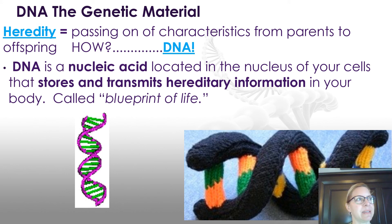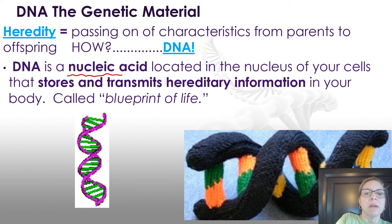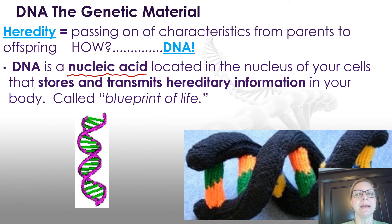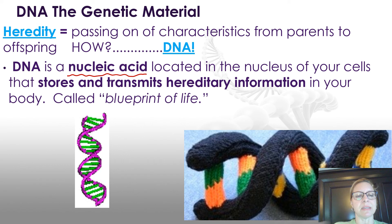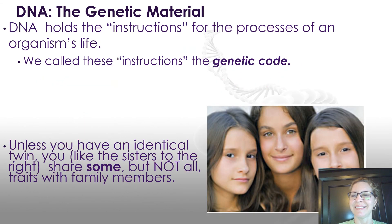First of all, heredity — what is heredity? It's basically the passing of characteristics from parents to offspring, and how does this happen? It's your DNA. What is DNA? DNA is a nucleic acid — you've heard that: deoxyribonucleic acid. It's located in the nucleus of all of your cells. Every single one of your cells has DNA in it, except for a mature red blood cell. But what does it do? It stores and transmits hereditary information in your body. You'll sometimes hear it called the blueprint of life. Now's the time you might want to pause and write down this information.